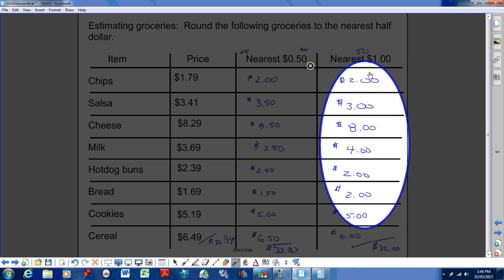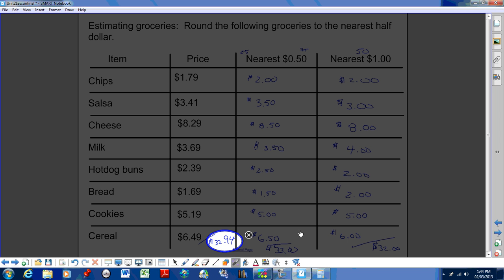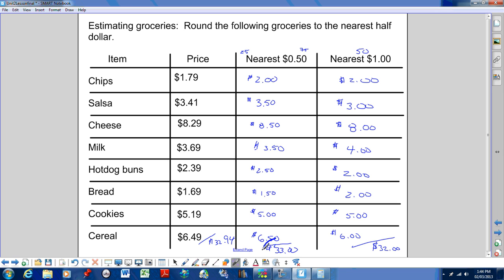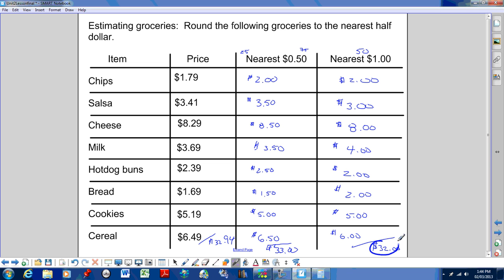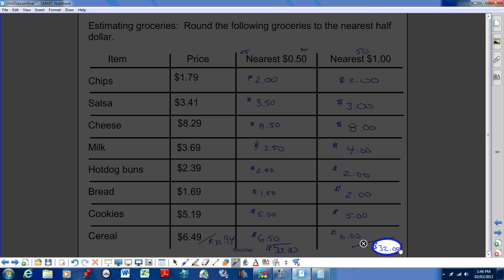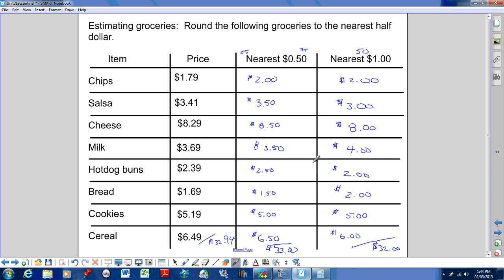You could also go to the nearest dollar as well, and what we found when I did the total with the calculator, the price of this shopping list was $32.94. When we approximated, which is a guess, we got $33. So we were actually over by 6 cents, and when we went by dollars, we were almost 94 cents short. So you can see that the amount, when you round up, when you round down, regardless which way you go, in the end, it makes up the difference and seems to balance out.